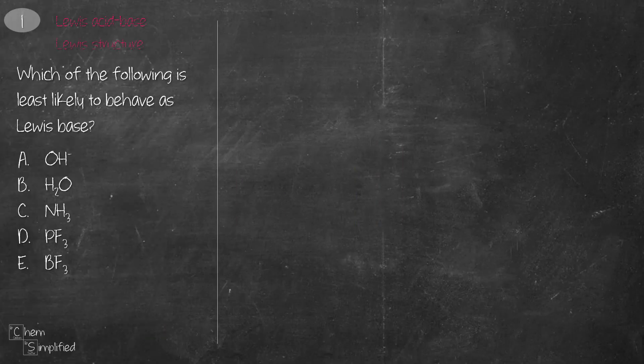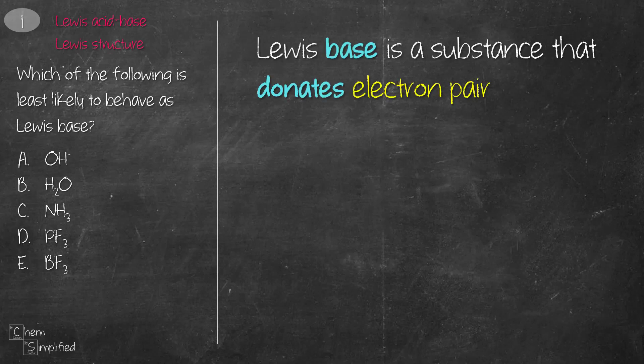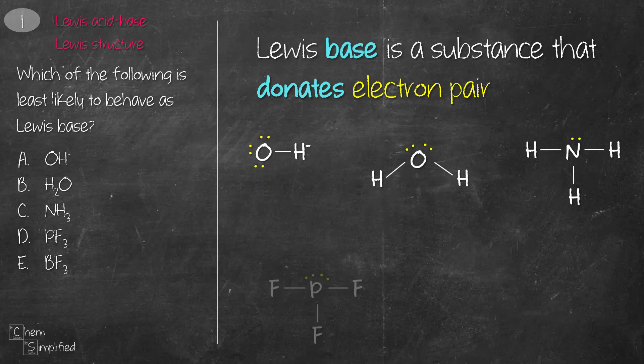This question involves Lewis acid-base theory and Lewis structure. To answer this question, we need to know that a Lewis base is a substance that donates electron pair, and that means the Lewis base will need to have at least one lone pair present to be donated. Looks like BF3 is the only Lewis structure without a lone pair on its central atom, making E the correct answer.